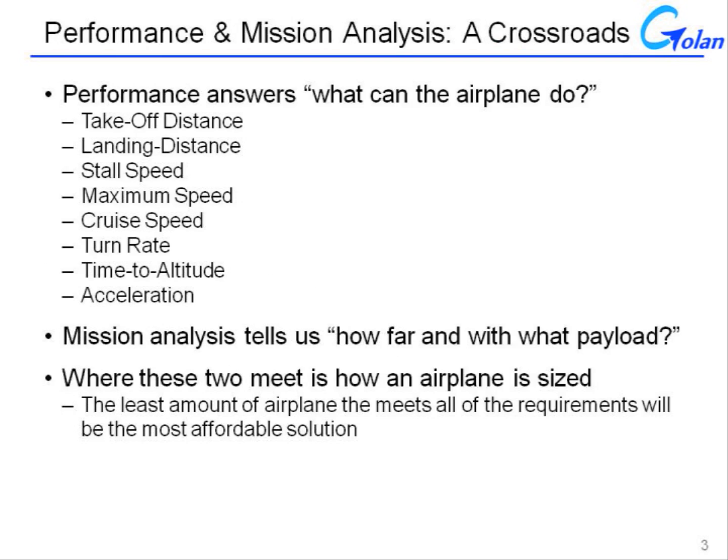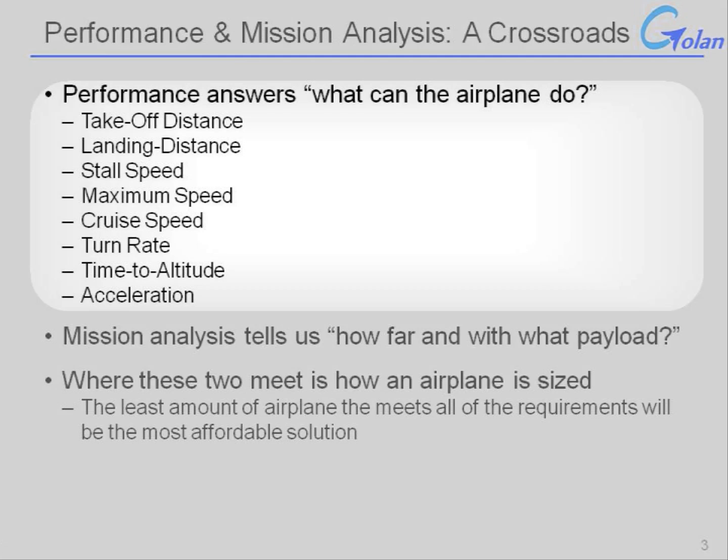Aircraft performance answers the question of what can the airplane do. Things like takeoff distance, landing distance, stall speed, maximum speed, cruise speed, turn rate — all of these are different measures of performance.